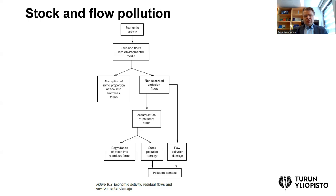Regarding the pollutant stock box in the diagram, there are also two arrows — over time, the pollutant stock will also degrade into a harmless form. For example, radioactive material from nuclear waste becomes less and less radioactive over time, and eventually would degrade into harmless form. The problem is that it takes a very long time, so accumulated nuclear waste left in the natural environment continues to cause damage for a very long time. The same is true for heavy metals, chemical waste, and carbon dioxide.